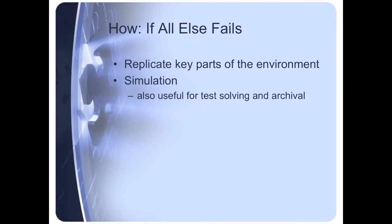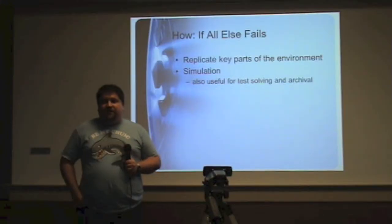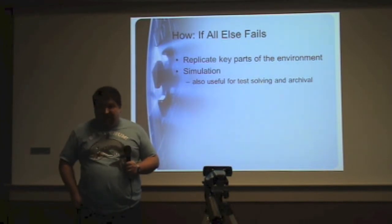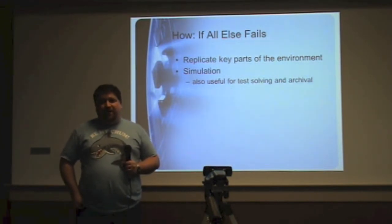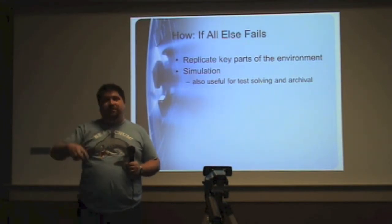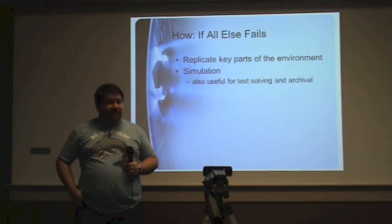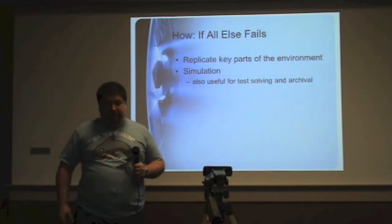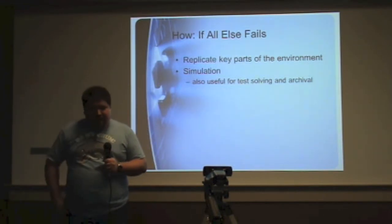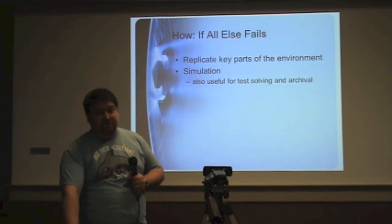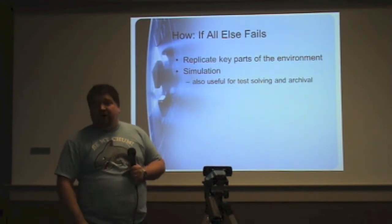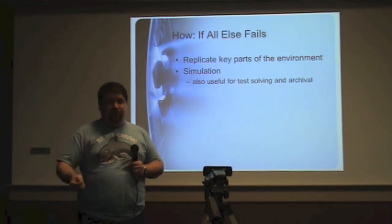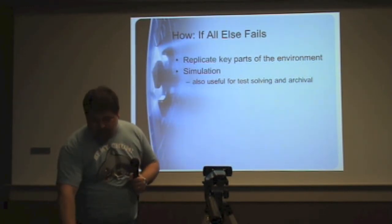If all else fails, you can replicate parts of the original location's environment on paper or electronically — imagine building a 360-degree panoramic photo of something and saying, here's what you would see in the original location, the rest of the puzzle is still fun. That approach is useful for both test solving the puzzle in the first place — so you don't have to send every single test solver to the physical location, and you don't have to go back to the same physical location every time you want to retune the puzzle — and it's also useful for online archival post-event.